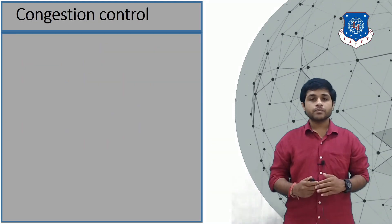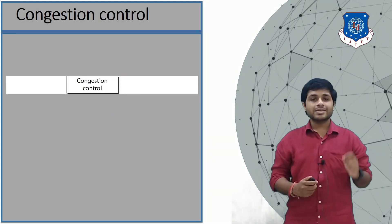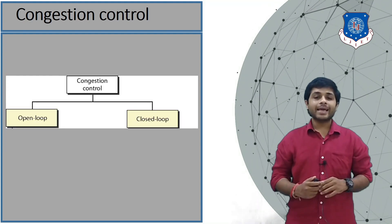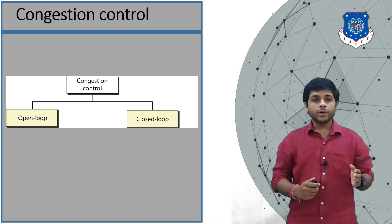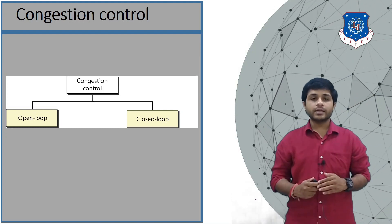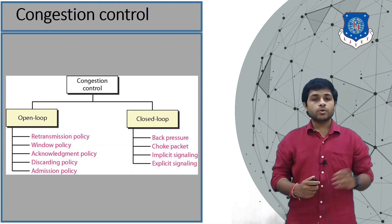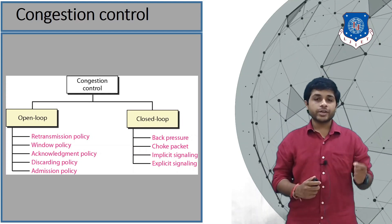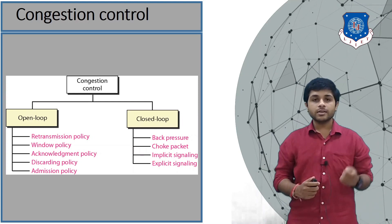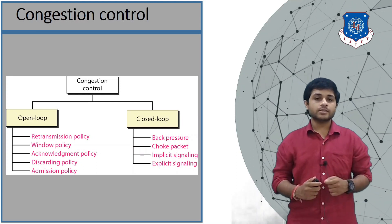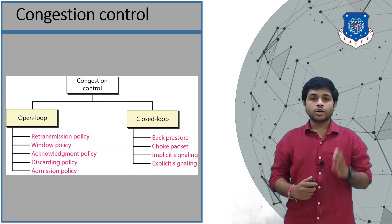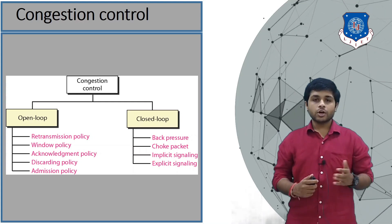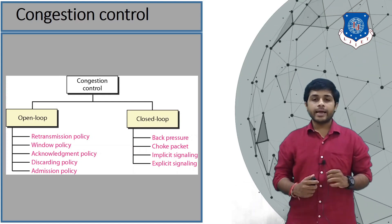Congestion control is divided into two types: open loop congestion and closed loop congestion. The open loop congestion has different types: retransmission policy, window policy, acknowledgement policy, discarding policy, and admission policy. The closed loop congestion has different types: back pressure, choke packet, implicit signaling, and explicit signaling.